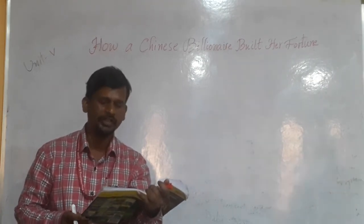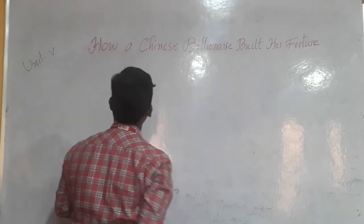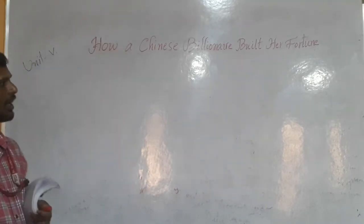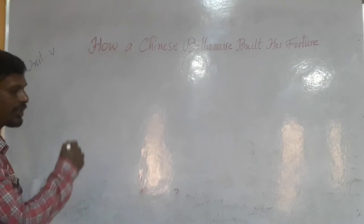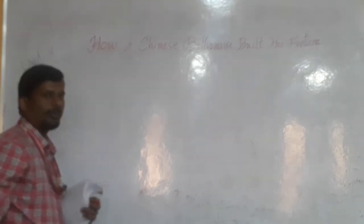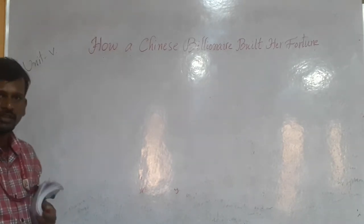The title is How a Chinese Billionaire Built Her Fortune. Here we have to see the parts of speech. See, mostly all are in capital letters only, all the words started with capital letters, except article A. How is a pronoun, interrogative pronoun, and also sometimes it works as adverb too.